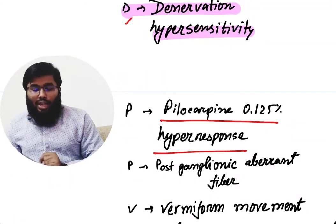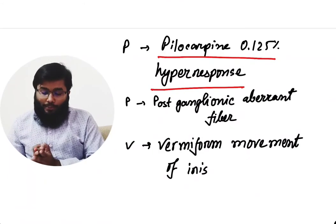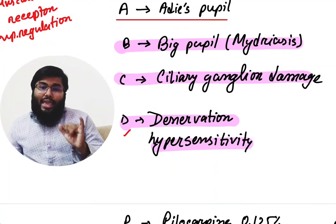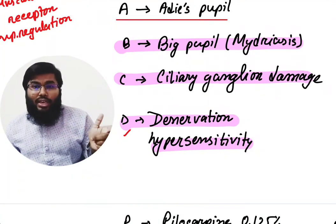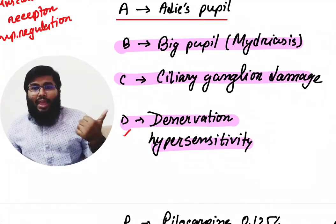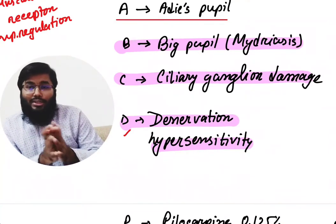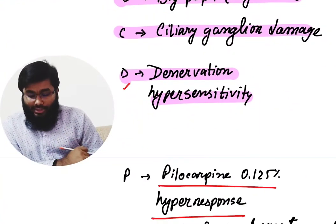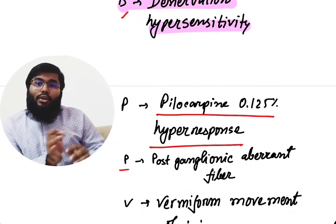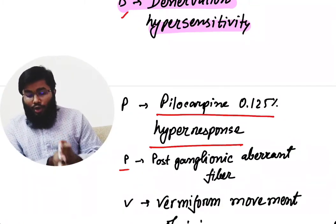This dramatic result indicates denervation hypersensitivity and pilocarpine hyper-response — an important feature for diagnosing the case. We give 0.1–0.5% pilocarpine and observe the dramatic result. Completing the mnemonic: A for Adie pupil, B for big pupil, C for ciliary ganglion damage, D for denervation hypersensitivity, P for pilocarpine hyper-responsiveness, and another P for post-ganglionic aberrant fiber.